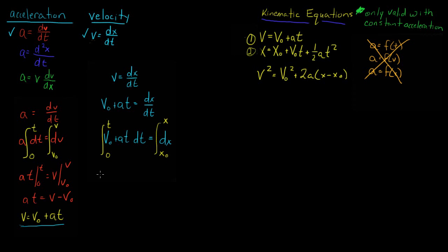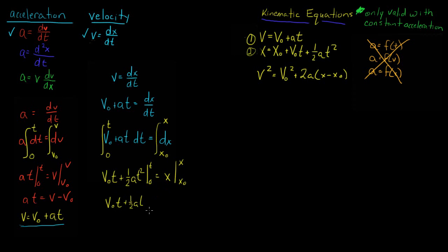Evaluating the integral gives v₀·t + ½a·t², evaluated from t to 0, equal to x − x₀. Bringing x₀ to the other side yields the second kinematic equation: x = x₀ + v₀·t + ½a·t².